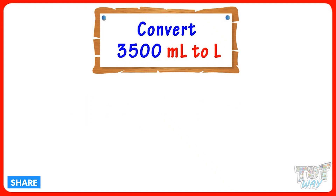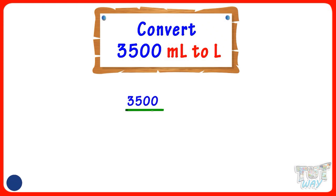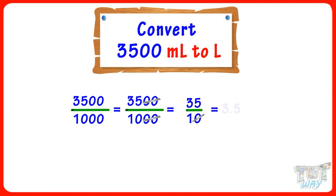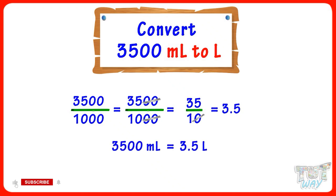3500 milliliters equals how many liters? 3500 milliliters equals 3500 divided by 1000 liters. Cutting zeros, we get 35 divided by 10. Putting the decimal after 1 digit from the right, we get 3.5. So 3500 milliliters equals 3.5 liters.